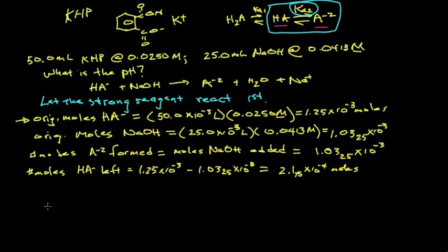From these two calculations, we can get the new concentrations, or analytical concentrations, after the sodium hydroxide reacts. For HA, it's 2.175 times 10 to the minus 4 divided by the total volume of 75 milliliters, or 75 times 10 to the minus 3 liters. That works out to 2.90 times 10 to the minus 3 molar.